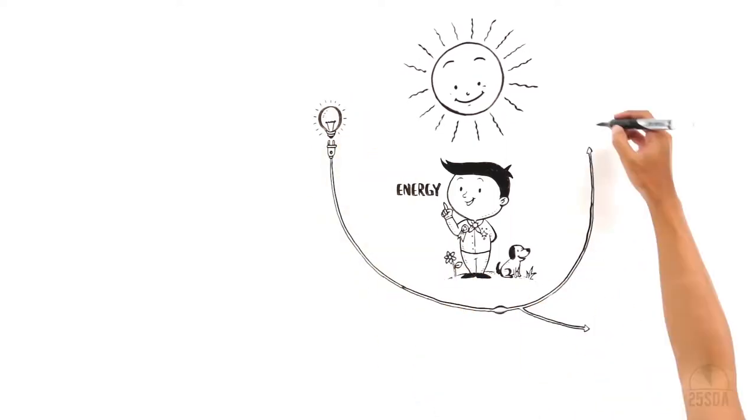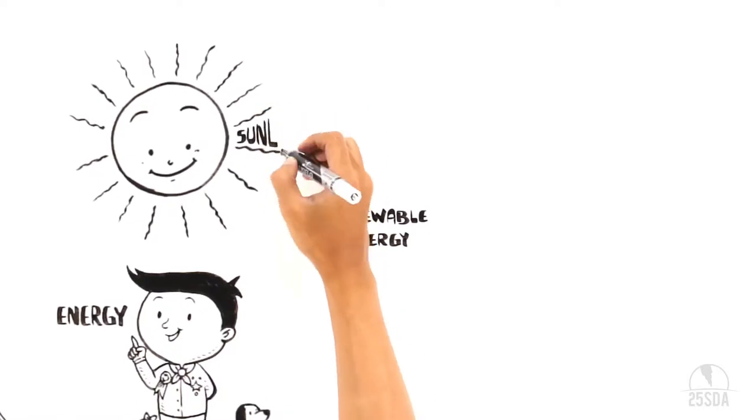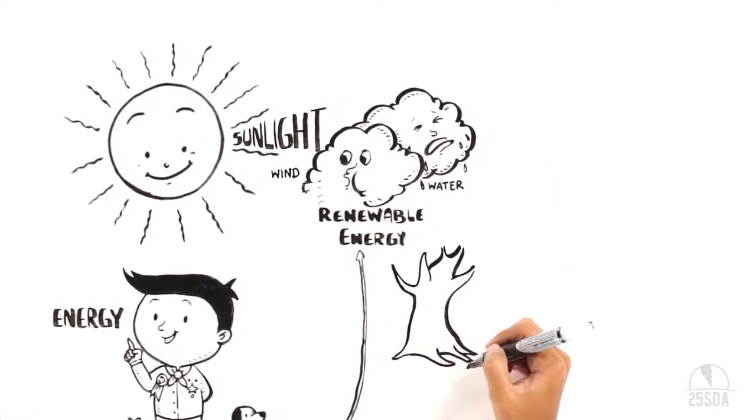There are two kinds of energies, renewable energy and non-renewable energy. Sunshine, wind, water, plants. The flow of energy from these guys never stops.